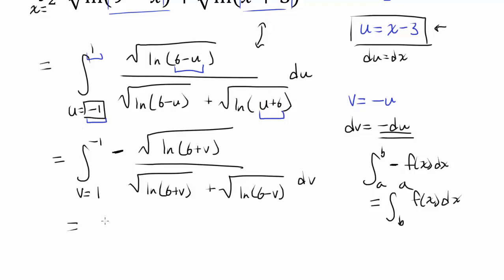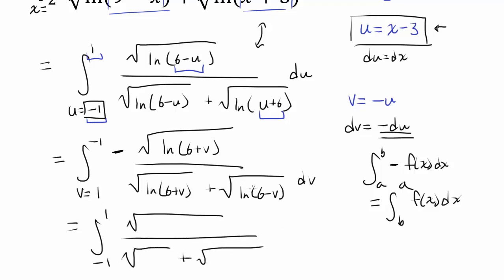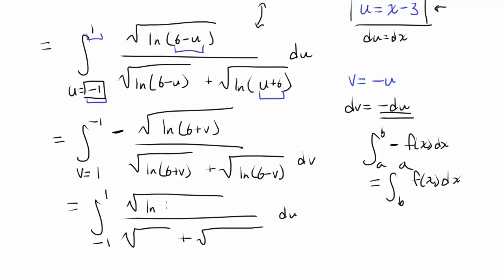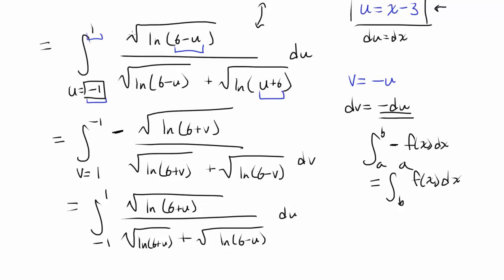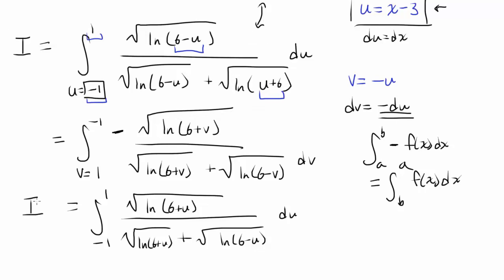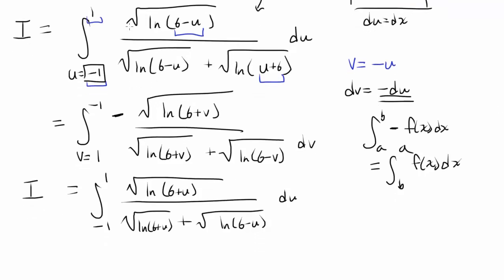We end up with the same limits of integration, negative 1 to 1. Writing the result in terms of u — since renaming a dummy variable in a definite integral doesn't change the area — we have square root of natural log of (6 plus u) in the numerator, over the same denominator: square root of natural log of (6 plus u) plus square root of natural log of (6 minus u). Just the numerator has changed. This integral is also equal to i.